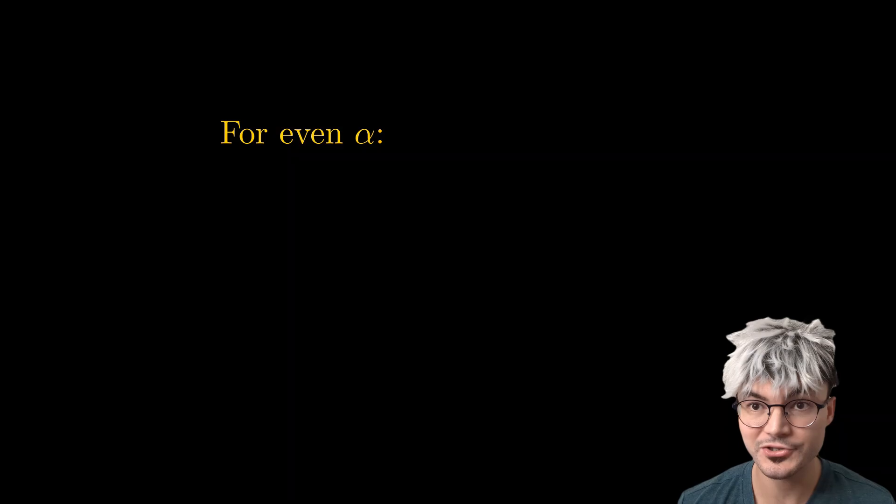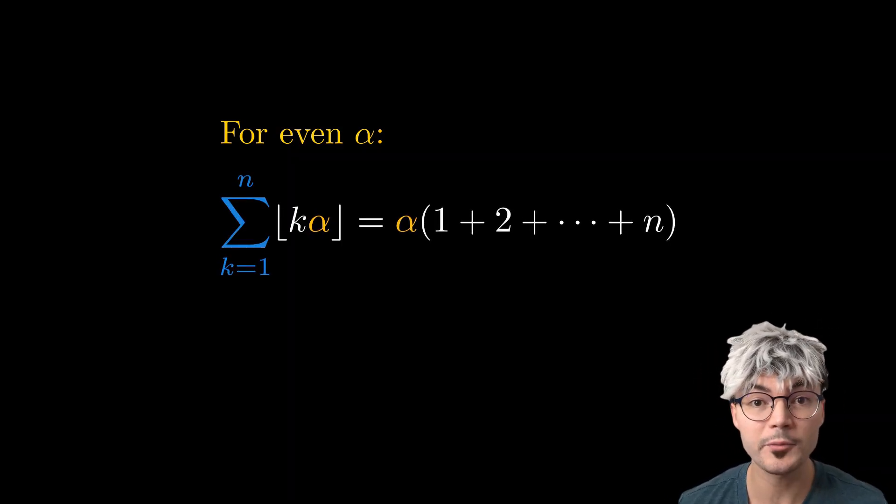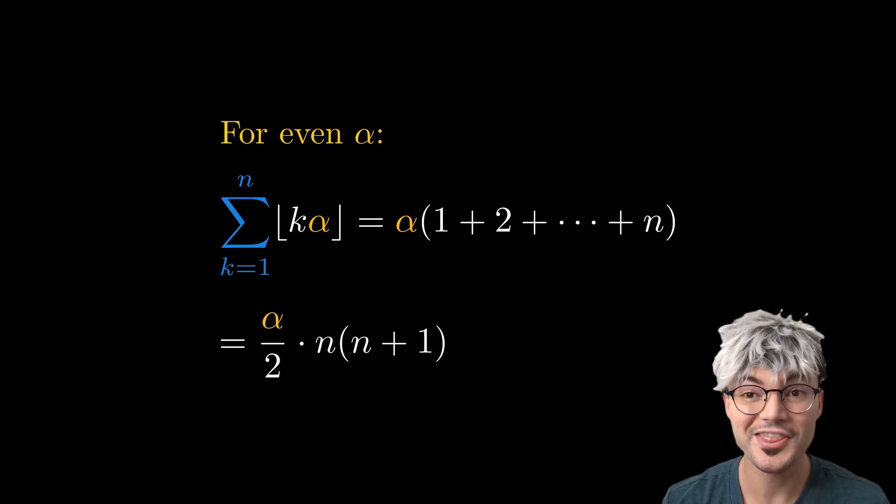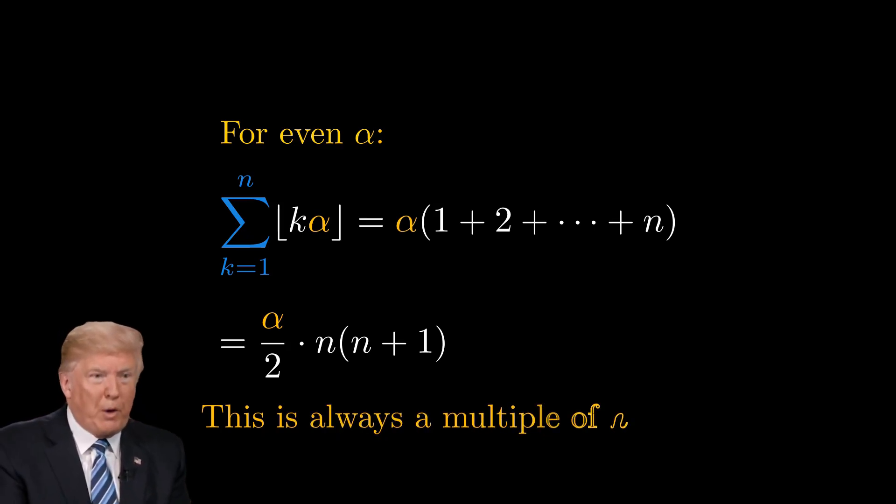Let's take alpha an even integer and see what happens. After factorizing by alpha, we get the sum of the first n integers, and that's a classic. Then, if alpha is even, alpha over 2 is an integer. This is always a multiple of n.